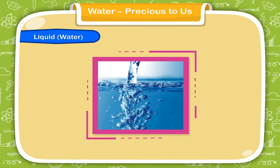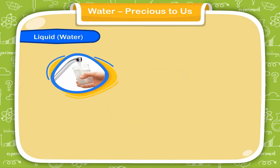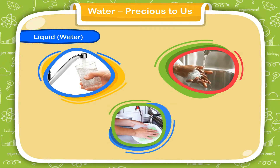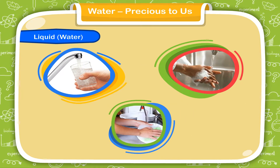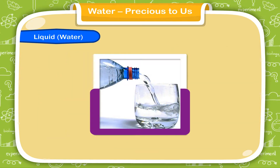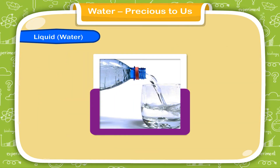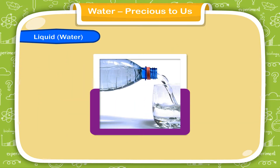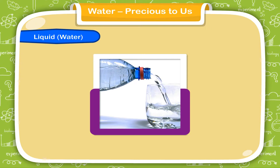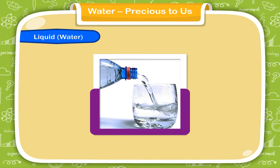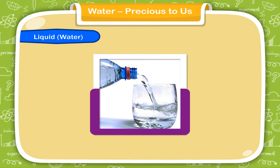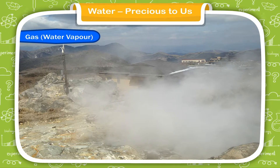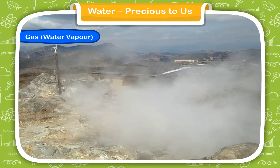Liquid water: we use the liquid form of water for drinking, washing, and cleaning. It has no definite shape; it takes the shape of the container into which it is poured. Pure water is colorless and odorless.